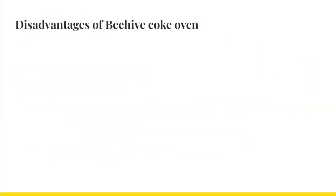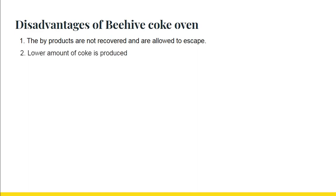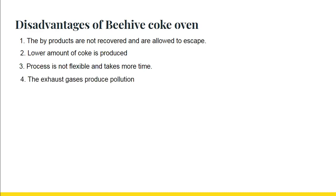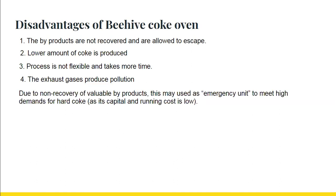The main disadvantage of the Beehive Coke Oven process is that the byproducts are not recovered and are allowed to escape. Very small amounts of coke are produced, it is not very flexible, and it takes three to four days to complete — making it time-consuming. The exhaust gases also cause pollution. Due to non-recovery of valuable byproducts, this process is generally not used and is only employed as an emergency unit to meet high demands for hard coke.